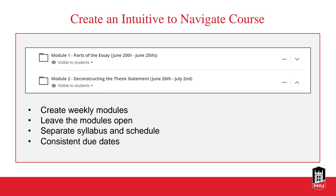Students tend to email you when they can't find things or are confused. One thing we encourage is creating a course that is consistent in its layout. For a 16-week course, have 16 modules — one module per week — labeled with the dates so students always know which unit they're in. Students who drop off for a while can look at the folders and immediately know which module they belong in.